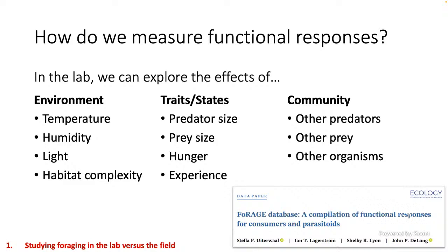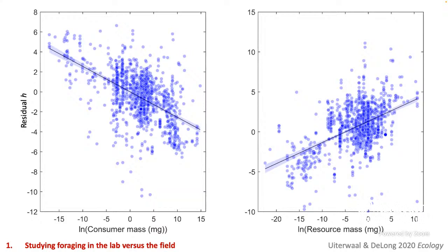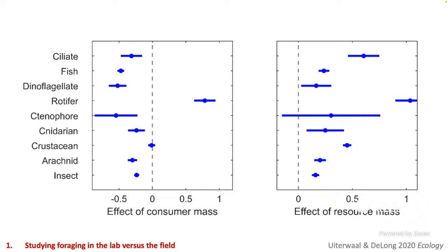Working with a couple of other people, we compiled what we call the FoRage database — a massive compilation of functional responses published in the literature. To date, there are almost 3,000 functional responses in this database. This has really allowed us to dig into what that research has shown us about foraging. For example, we know that consumer mass and resource mass are really important. Handling time — how long it takes a predator to handle prey and resume searching — is shorter for larger consumers and longer for larger prey. We also know the effects of consumer mass and prey mass differ by taxa, giving us thousands of experiments that help us understand foraging rates under all sorts of conditions, especially in the lab.